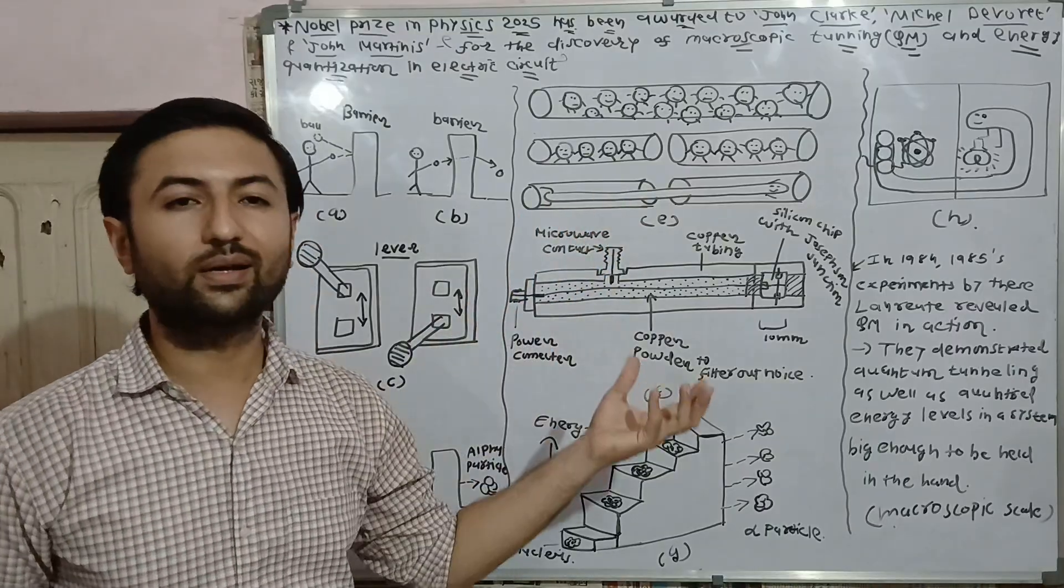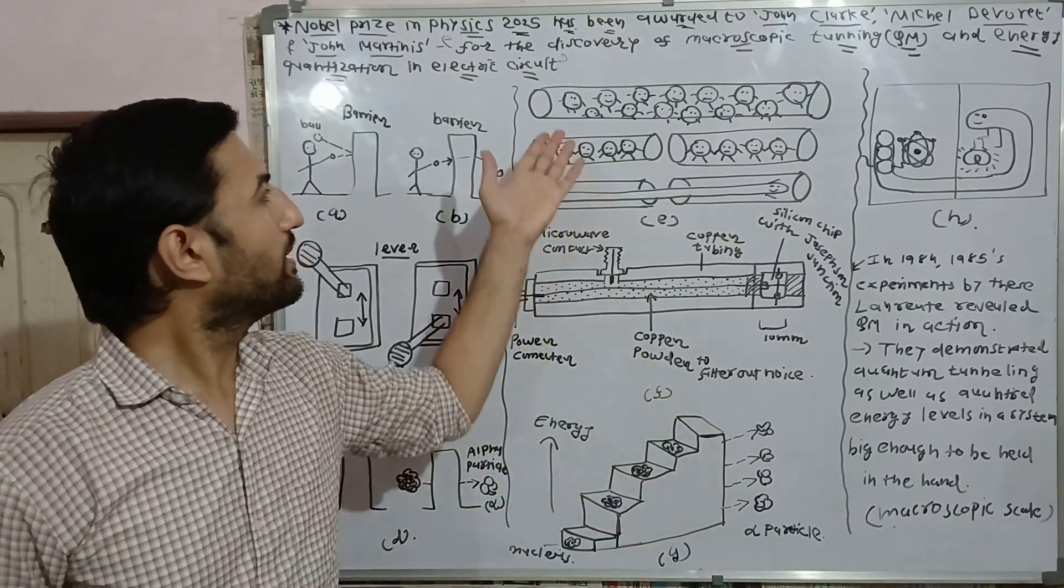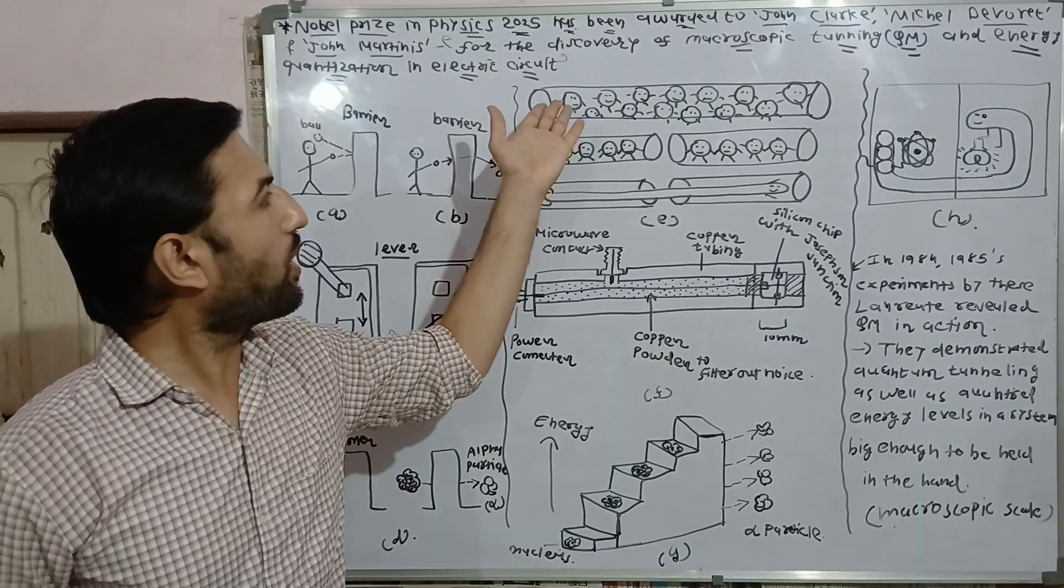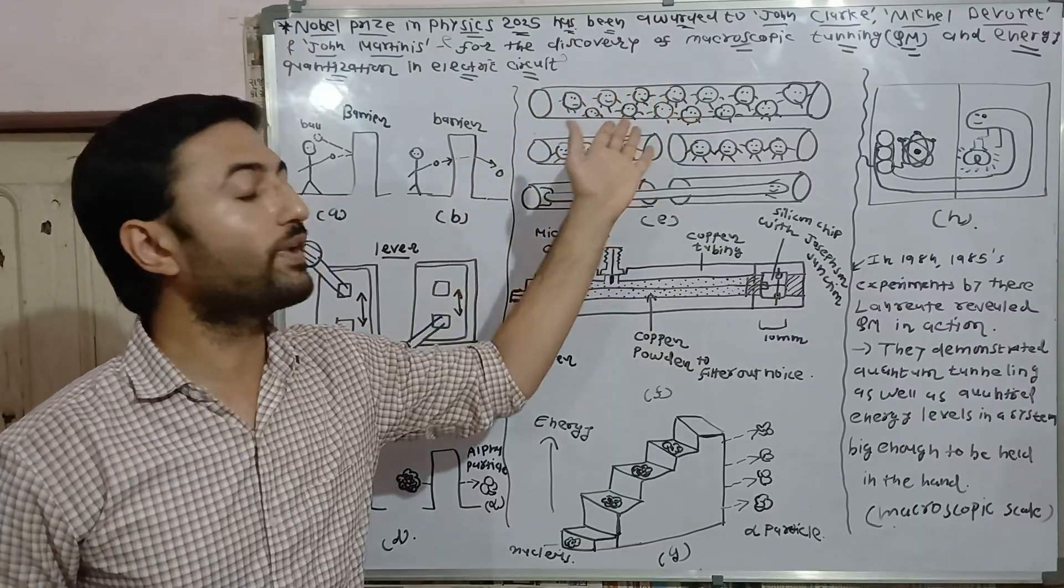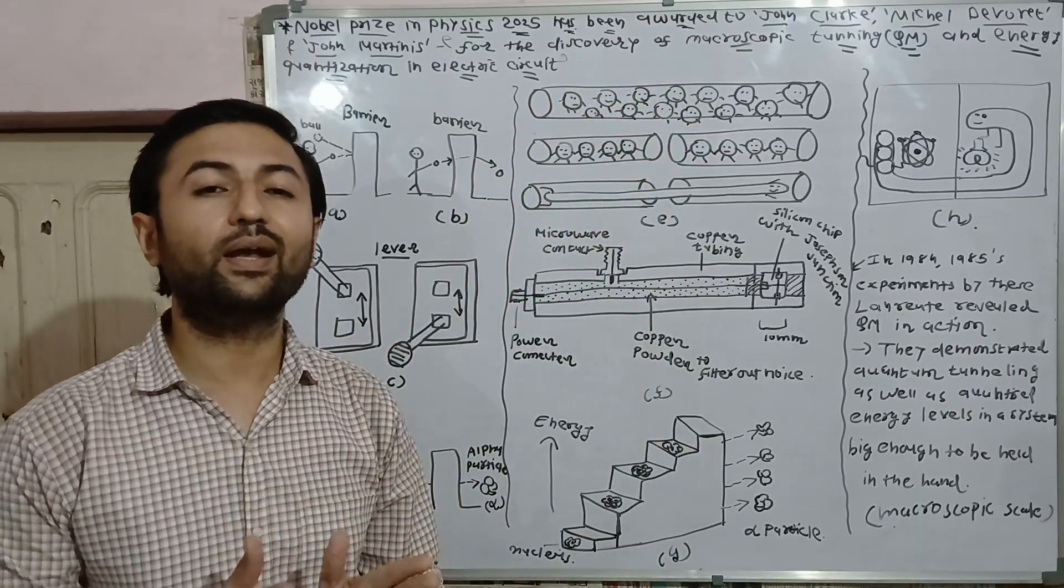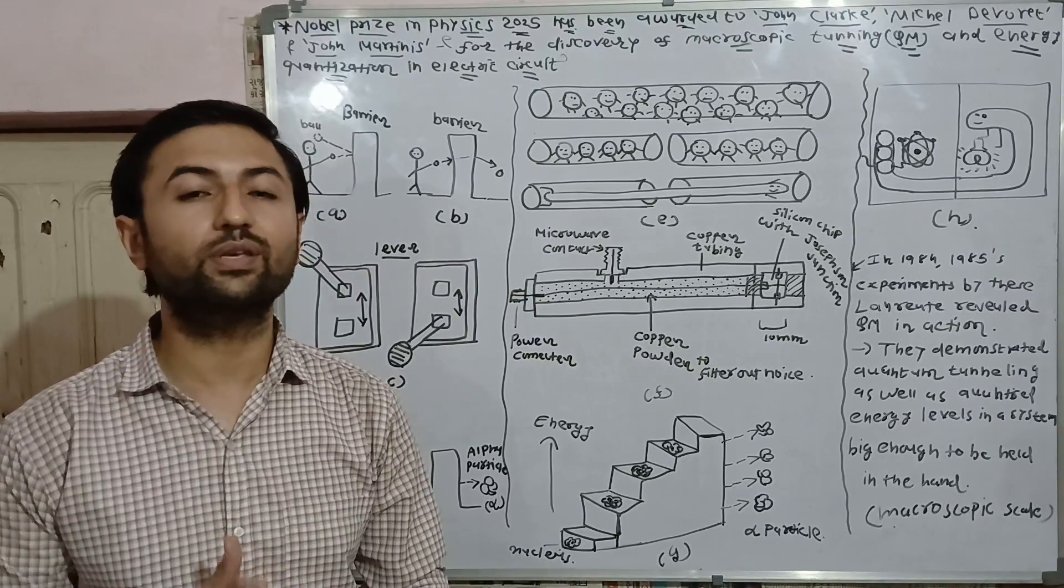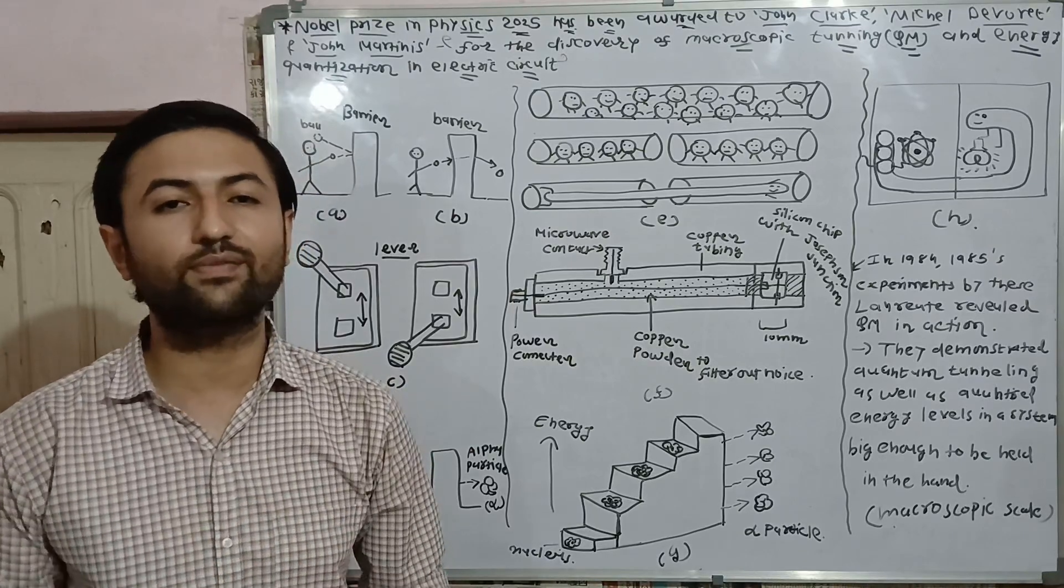The nucleus will emit alpha decay through this barrier and we have alpha particles. In normal conductors, what happens in normal conducting materials: all electrons collide with each other and create kind of drift which is responsible for creation of resistivity.